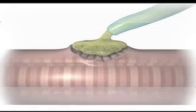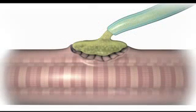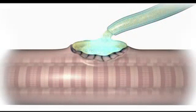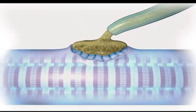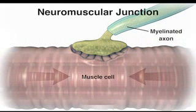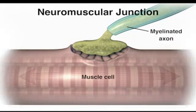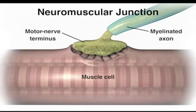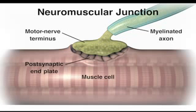It is important to understand the principles of normal neuromuscular transmission when using neuromuscular blocking agents. The neuromuscular junction consists of the motor nerve terminus, the postsynaptic muscle endplate, and the intervening gap.